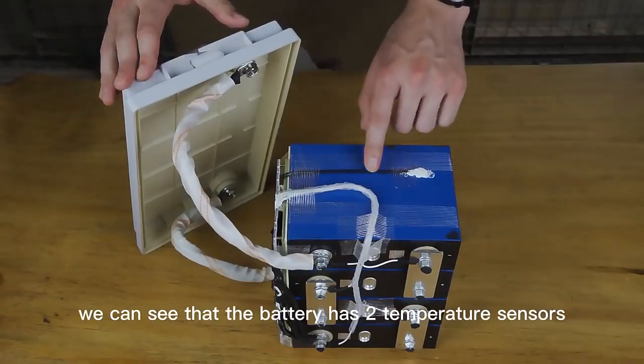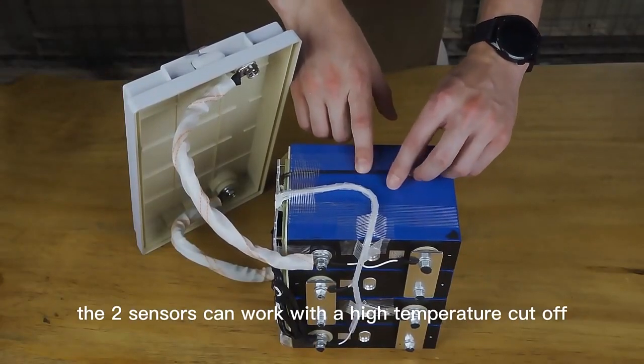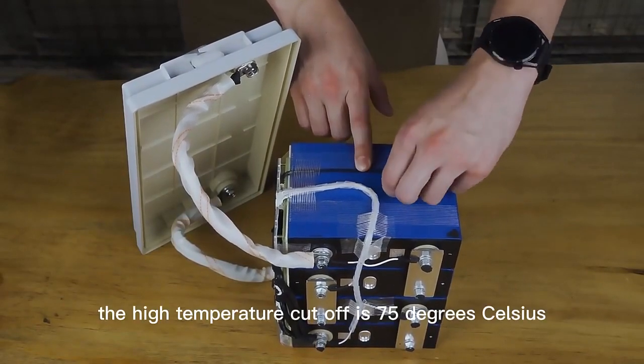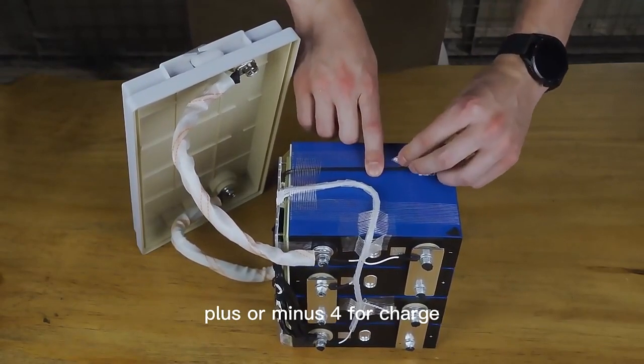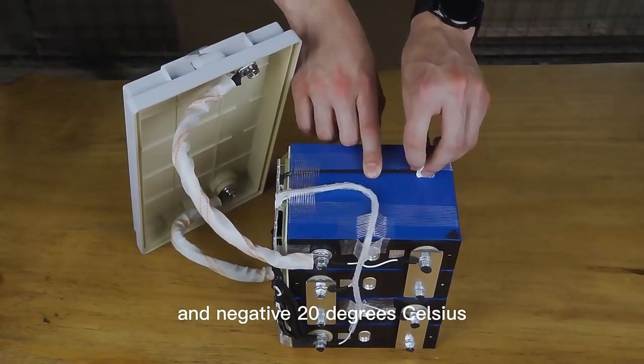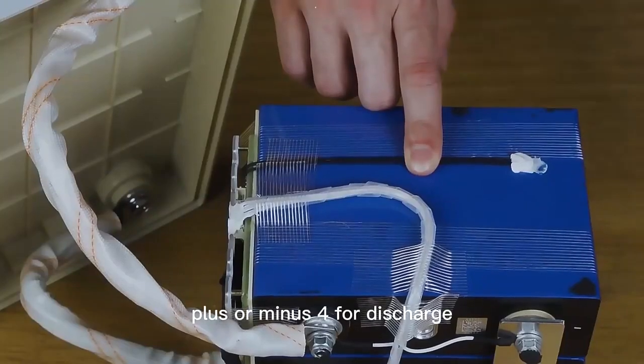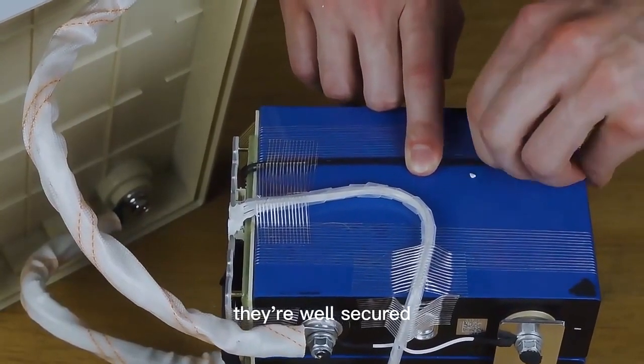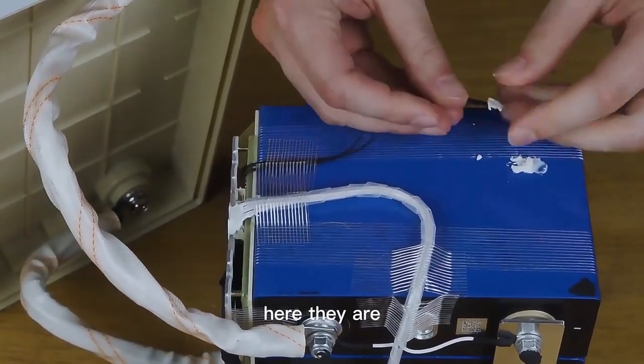Next, we can see that the battery has two temperature sensors. The two sensors can work with a high temperature cutoff and a low temperature cutoff. The high temperature cutoff is 75 degrees Celsius and the low temperature cutoff is 0 degrees Celsius plus or minus 4 for charge and negative 20 degrees Celsius plus or minus 4 for discharge. You can see them under here. They're well secured.